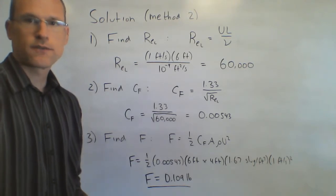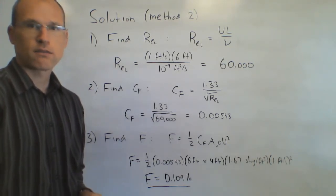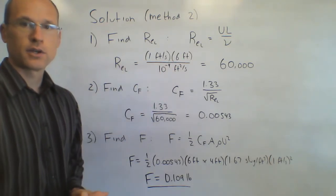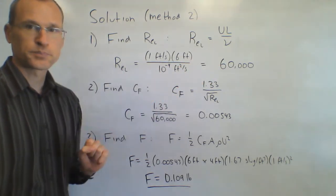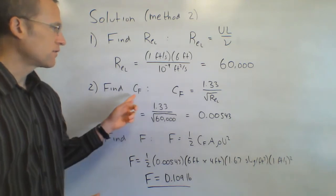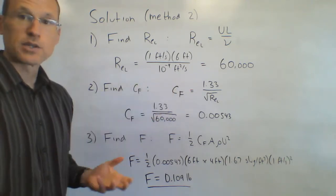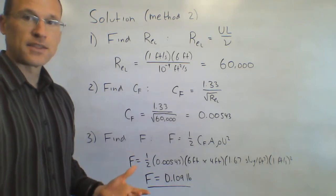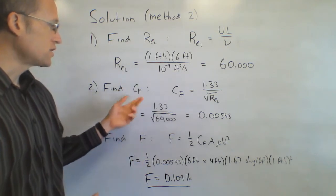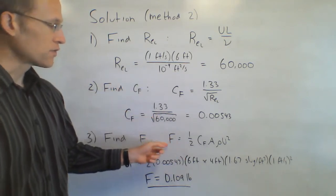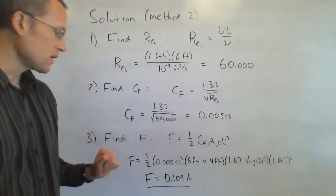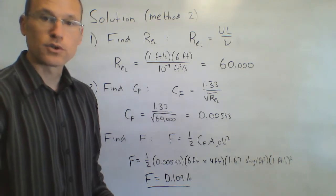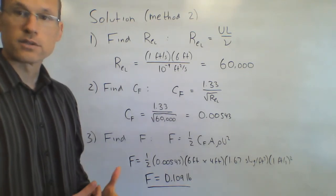This second method has three steps. Step one: find the Reynolds number based on length — Re_L = U times L over kinematic viscosity = (1)(6) / 10⁻⁴ = 60,000. Step two: find C_F = 1.33 / √Re_L = 1.33 / √60,000 = 0.00543. Step three: find force from the definition — F = (1/2) C_F times area times rho times U squared = (0.5)(0.00543)(6×4)(1.67)(1²) = 0.109 pounds. Same answer as before.